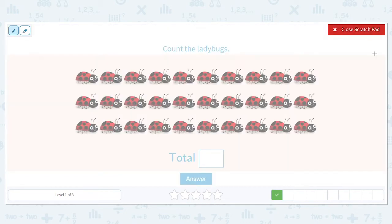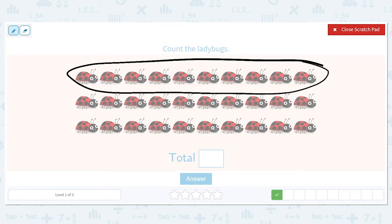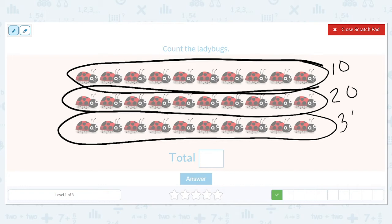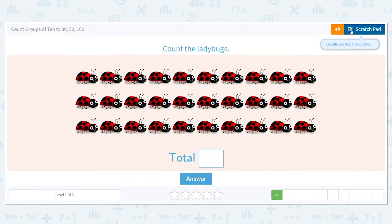Using my scratch pad again I'm going to circle my row of 10 here. And then my next row of 10. And then my last row of 10. That makes it easy to count. So let's count by tens. We have 10 plus another 10 makes 20 plus another 10 makes 30. So what is the total of ladybugs? We have 30 ladybugs. Great job.